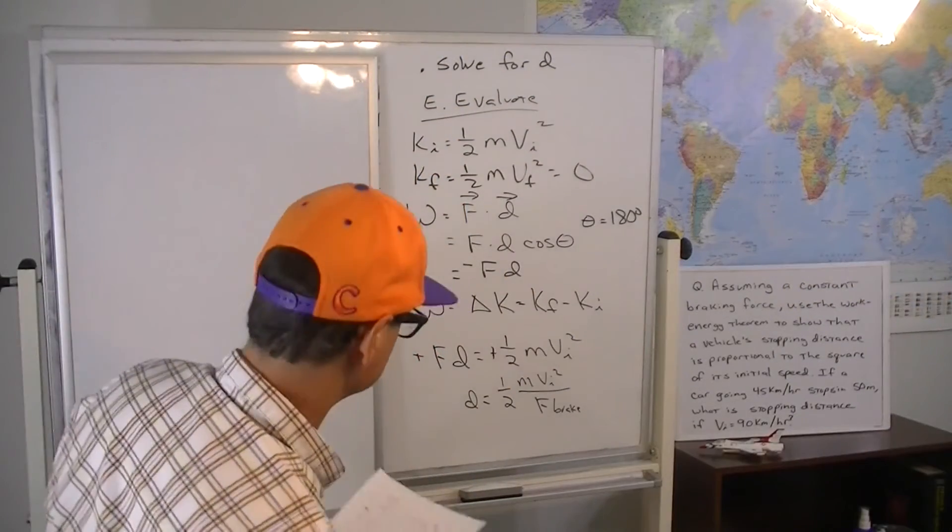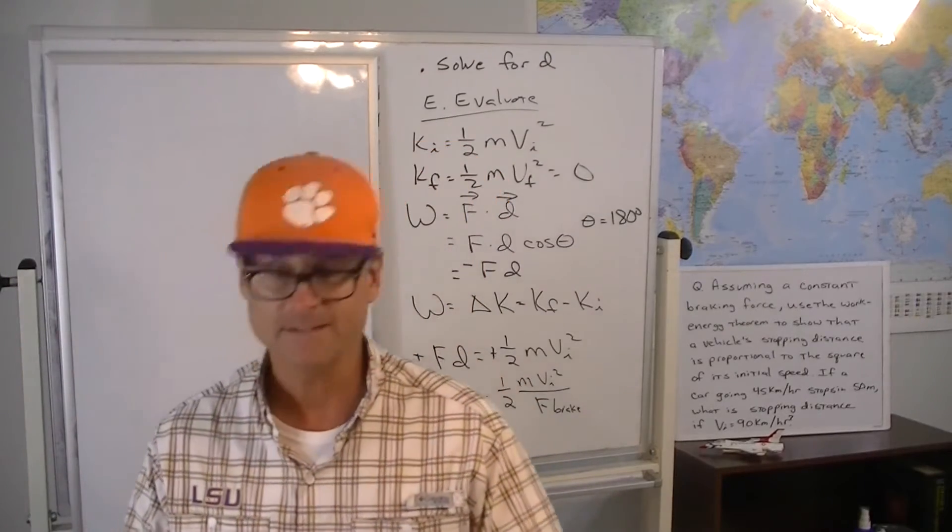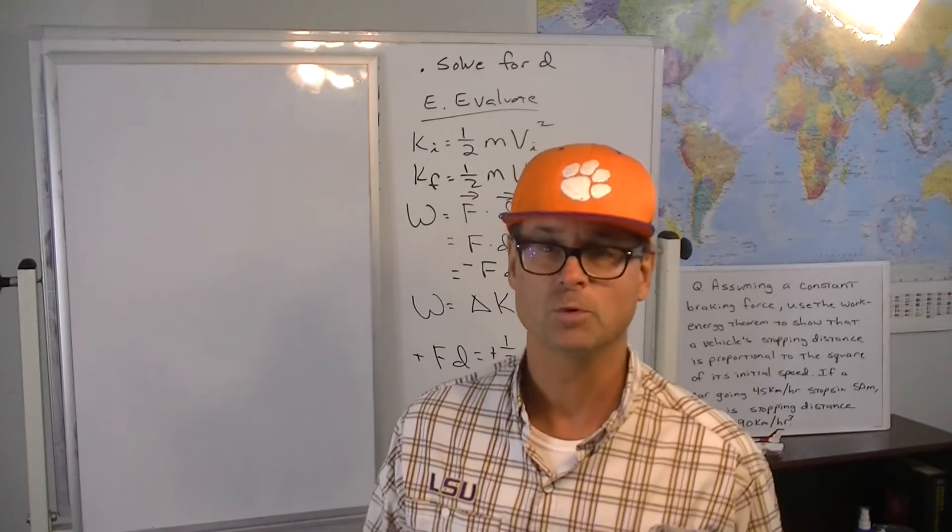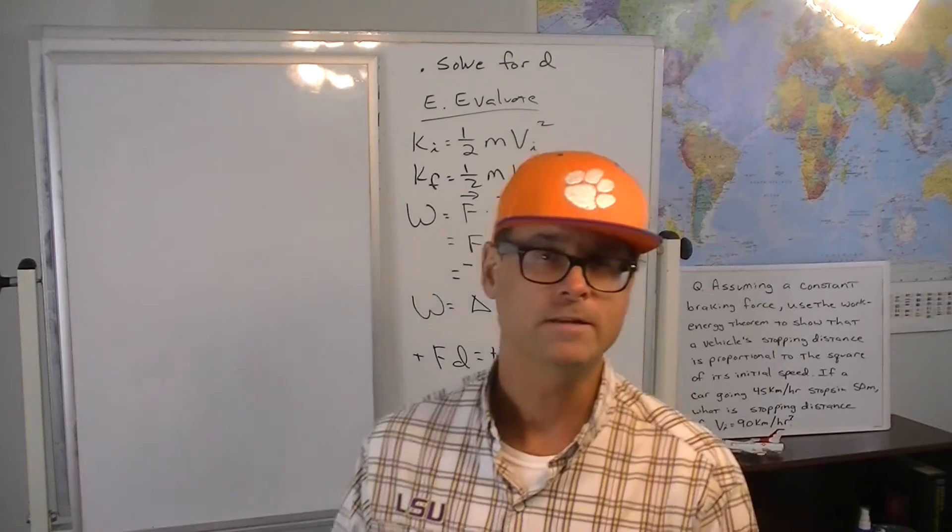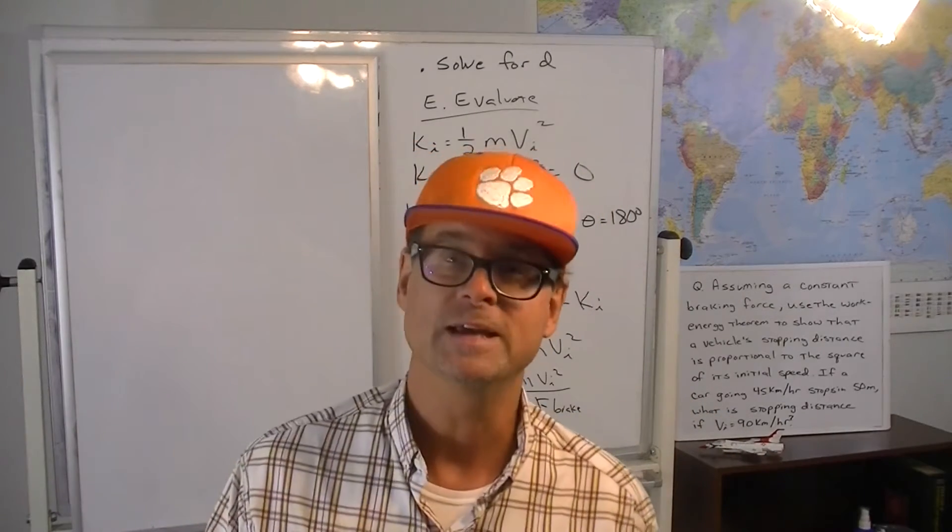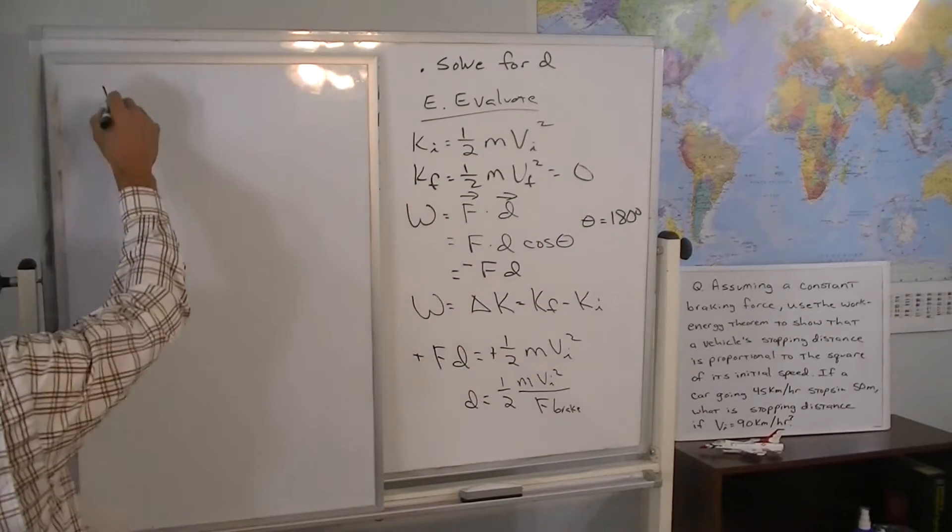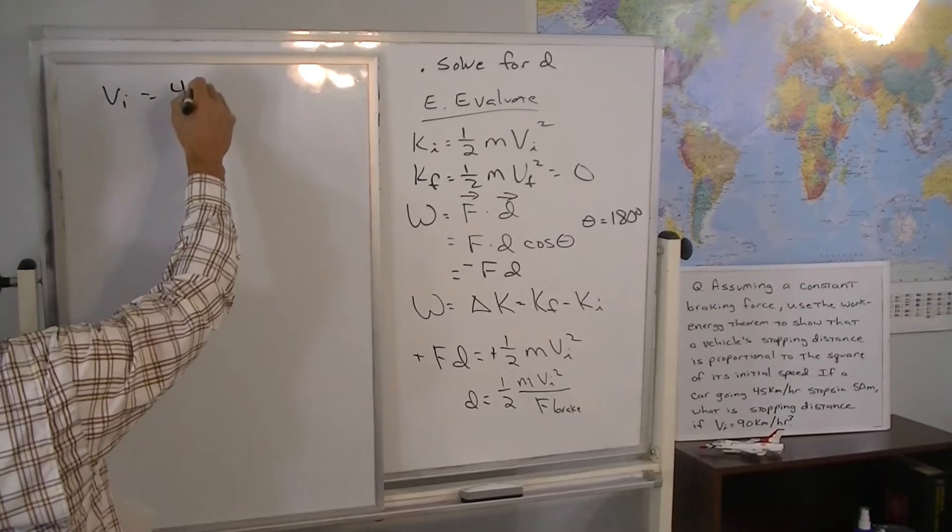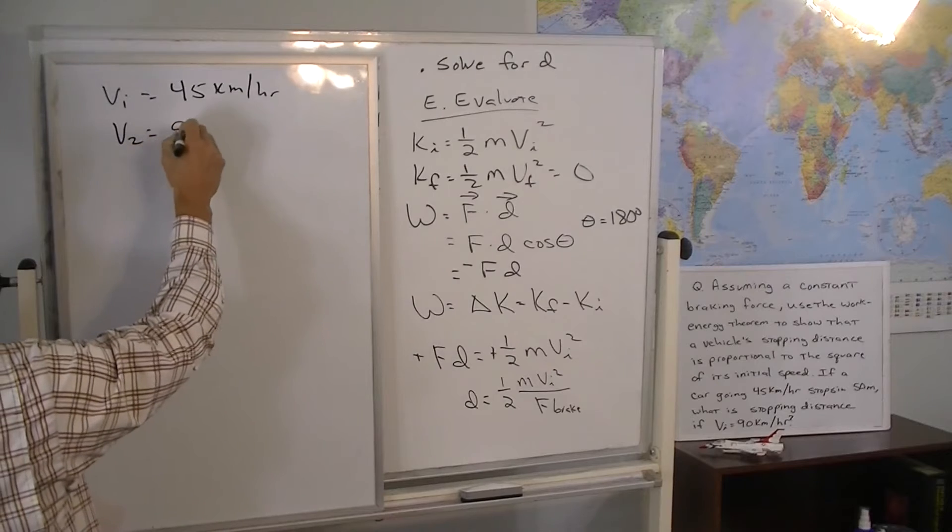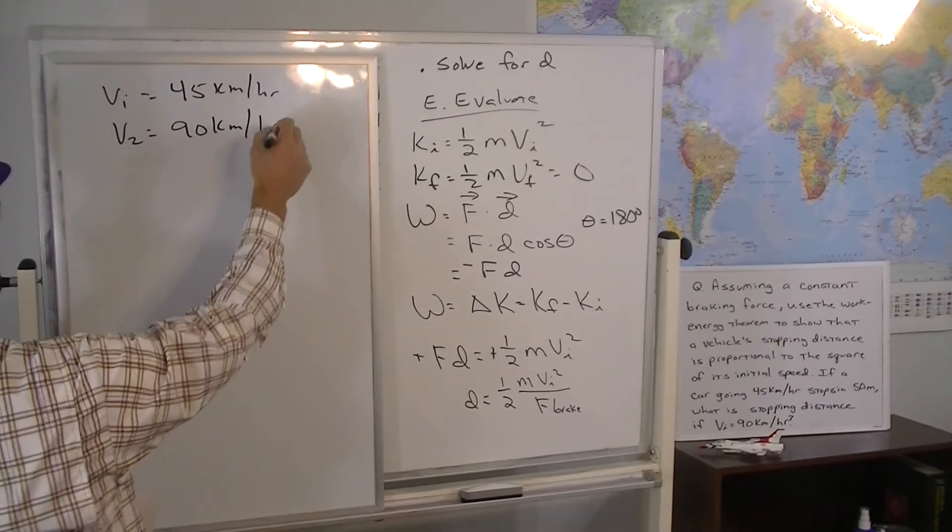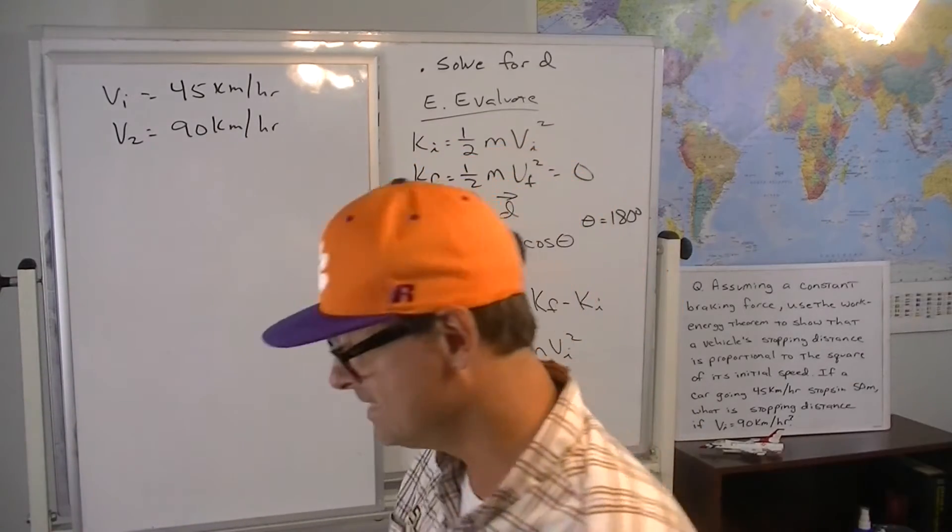All right, so now we have to evaluate for the second half. So, essentially, the second half is not as complicated as it might be if the numbers were different. Right? But with the two cases we have, one of the stopping distance, one of the initial speeds is twice the other initial speed, right? So we have, in case one, it's 45 kilometers per hour, and in case two, it's 90 kilometers per hour. So we don't have to get bogged down in all the numbers. The idea is just that it's doubled.